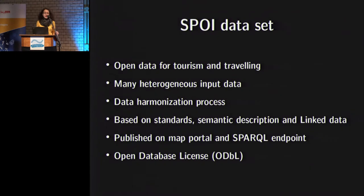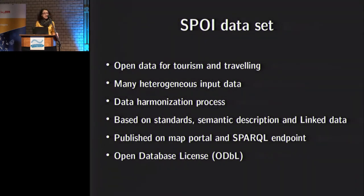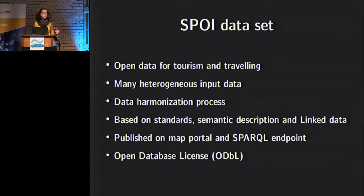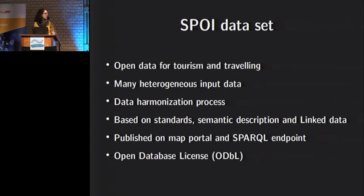What is our dataset? We collect data from different sources — points of interest important for tourism and traveling. We use different inputs, different sources, different contributors, and these input data are heterogeneous. We run the data through a harmonization process to have them in a common data model. The resulting data model is based on standards, semantic description, and linked data. We publish it on a map portal and through a SPARQL endpoint, provided under open database license.